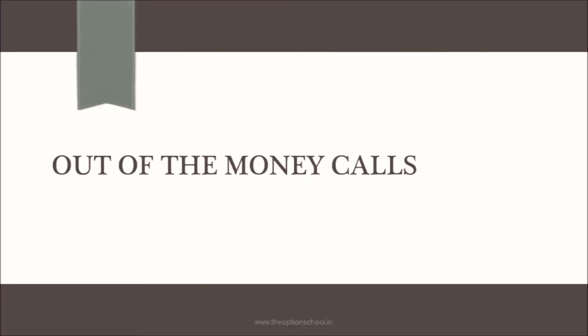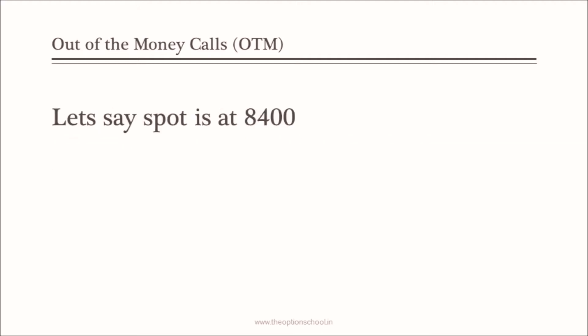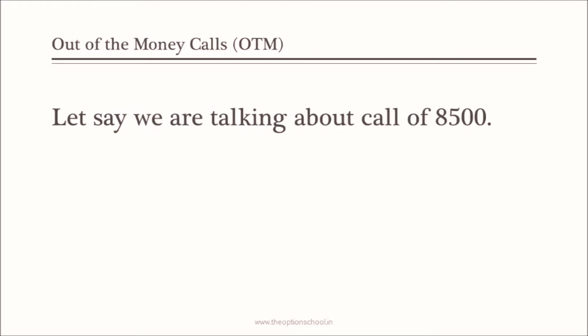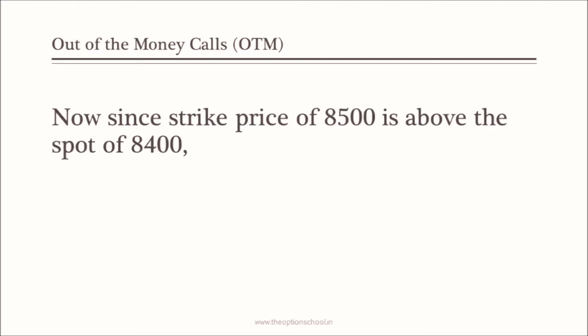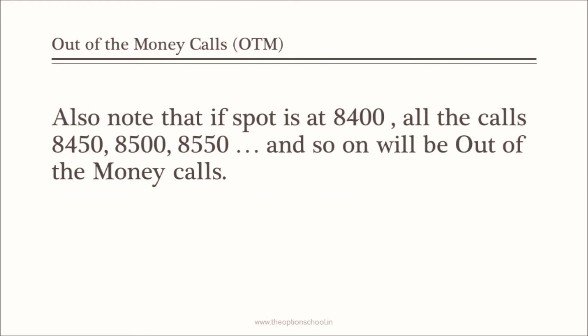Let us see what we mean by out of the money calls. A call is out of the money when the given strike price is above the spot price of the stock. Let us say the spot is at 8400 and we are talking about a call of 8500. Since the strike price of 8500 is above the spot of 8400, this strike price is out of the money — the 8500 call will be treated as out of the money. Also note that if spot is at 8400, all the calls above 8400 — that is 8450, 8500, 8550 and so on — will be out of the money calls.